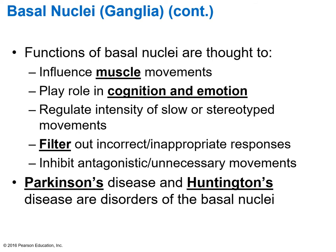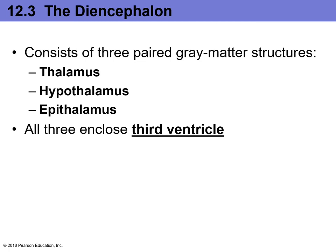The basal nuclei, also known as basal ganglia, form the third region within each hemisphere. They play roles in determining muscle movement, emotion, and cognition. They filter out inappropriate responses and inhibit unnecessary movements — producing smooth, regulated movement. Parkinson's disease and Huntington's disease affect the basal nuclei, which is why tremors occur when this system is disrupted.